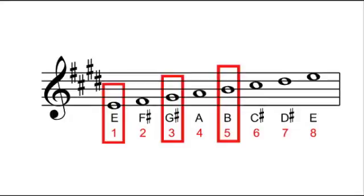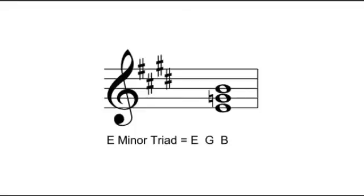But to change it to minor, we remember to flat the third. The third at the moment is G sharp. To flat a note means to move it one step down the chromatic scale. One semitone lower than G sharp is G natural. Notice that we've used the natural sign to cancel out the G sharp in the key signature. So the E minor triad consists of E, G, and B.